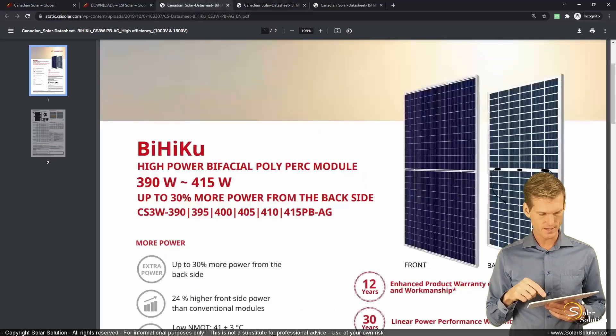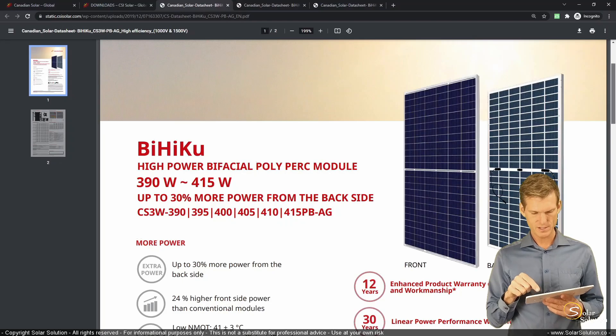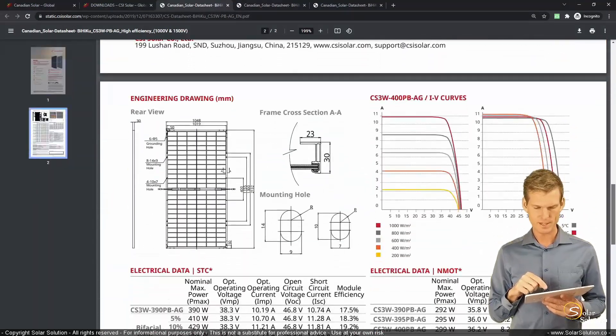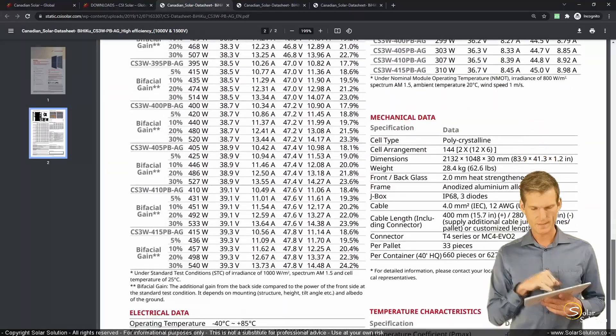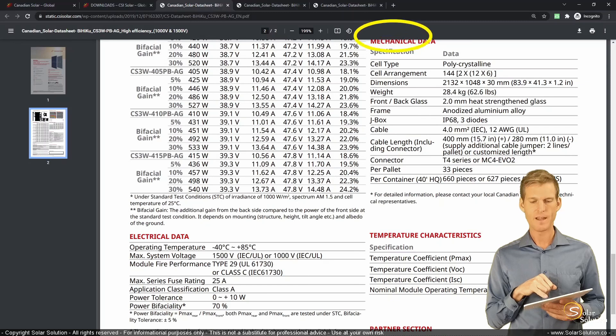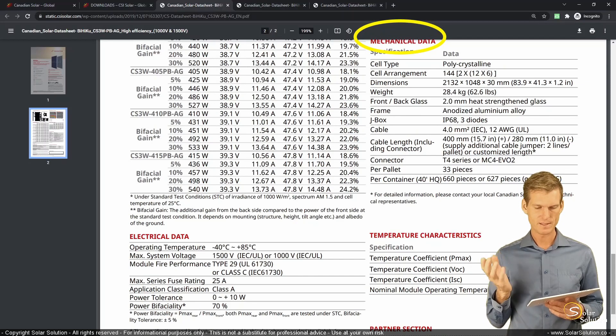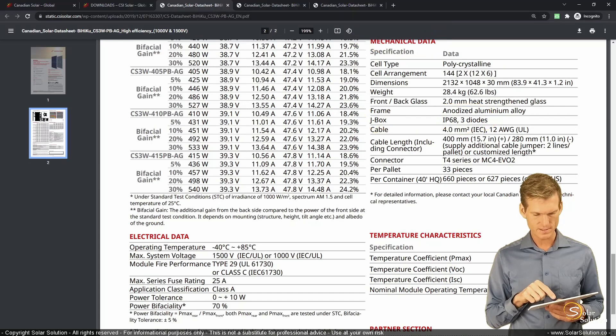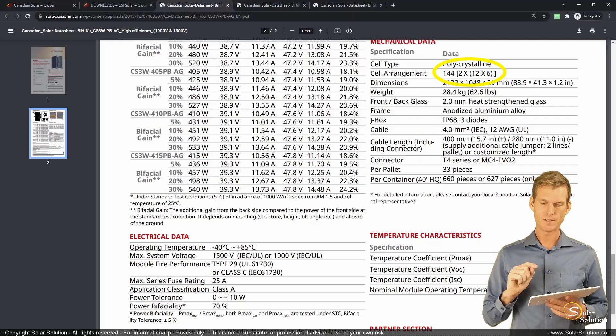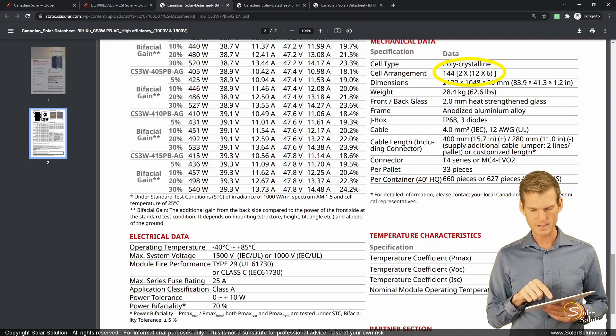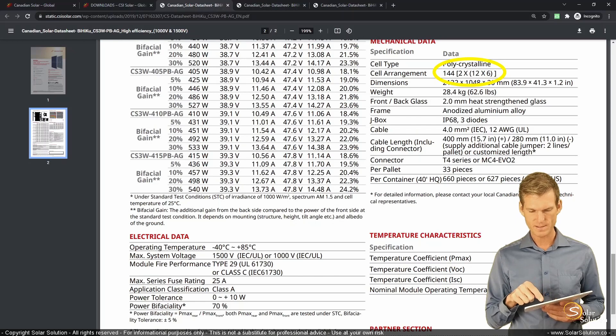Now, what we can also do is we can scroll down a little bit towards the specification and go to the mechanical data section. So here we can see that the junction boxes are Ingress Protection 68 and there are three diodes in the panel. So that overlaps with what I just explained to you on the whiteboard. And you can see that the cell arrangement is 144 cells in series versus the regular number of 72.